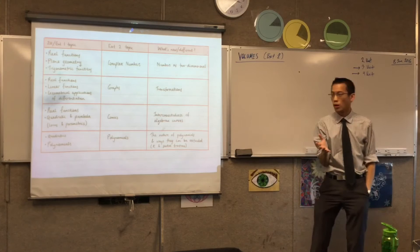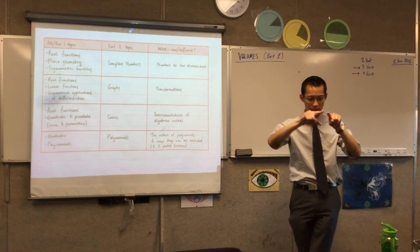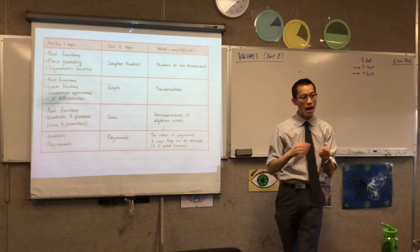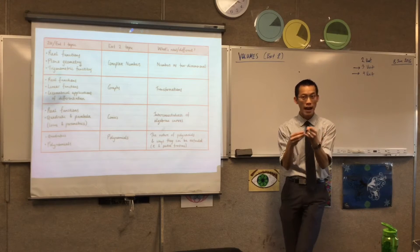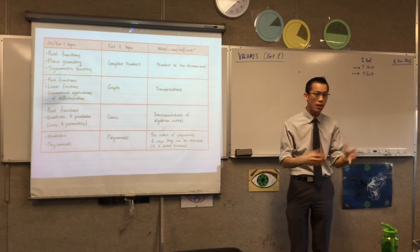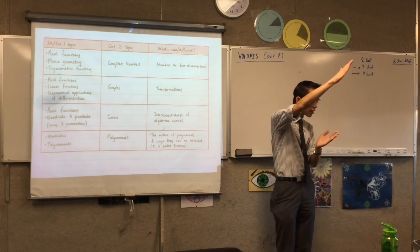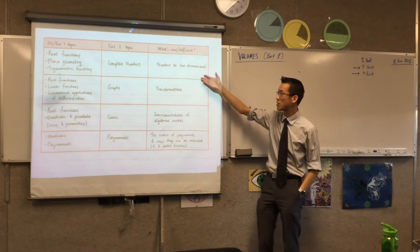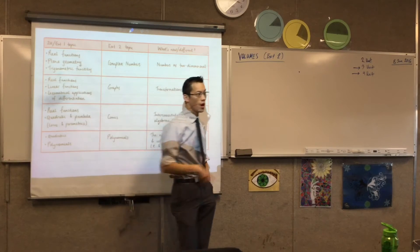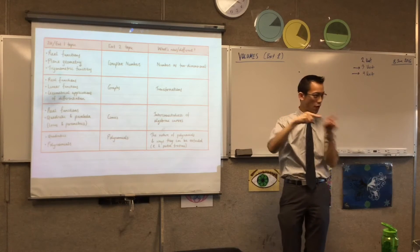The idea that was different in complex numbers was: let's think about the idea that a number doesn't just exist on a line, but it exists on a plane. Therefore you can think of it as a set of coordinates - it's got two parts to it. You can think of a number as a vector, because it not only has a scalar quantity but you can think of it as having a direction as well. That was what was new and different.